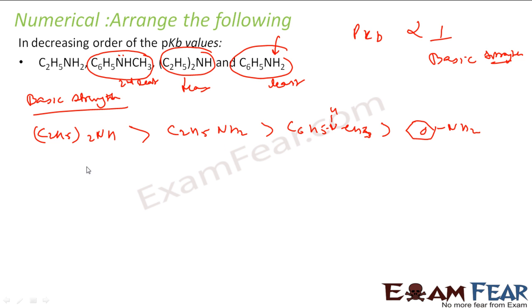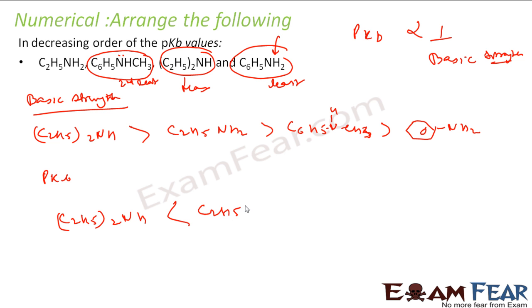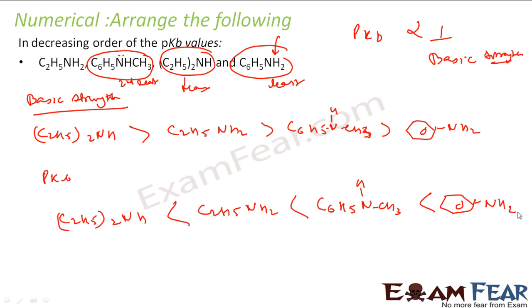The pKb order is just the reverse of the basic strength order. The most basic compound gets the lowest pKb, and the least basic (C6H5NH2) gets the highest pKb. So first find the basic strength and then just reverse the order — don't get confused. That is the best way to do it.